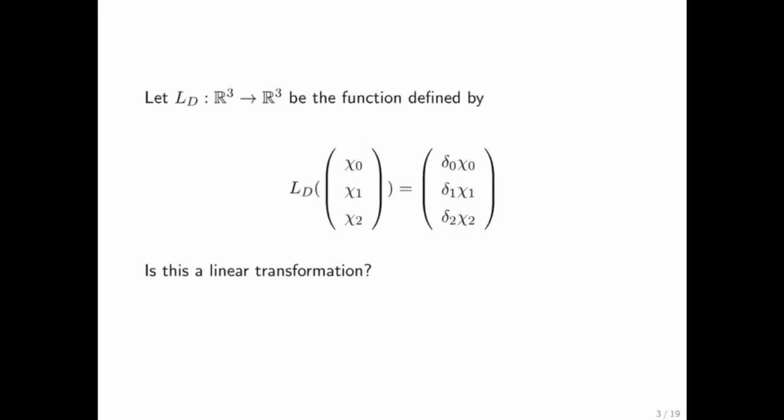As before, is this a linear transformation? What matrix represents it? In goes the first unit basis vector. Well, we know that the entries are multiplied by delta 0, delta 1, and delta 2. But these entries are equal to 0, so all we get is delta 0.